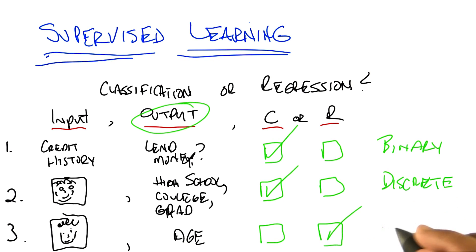Right, I think that is exactly right — you have a continuous output. But I want to point out that while the right answer is regression, a lot of people might have decided the answer was classification. What's an argument for why that would be? Well, if you think about ages as being discrete — you just say you can be one or two or three, up to 130 or so. Usually we don't talk about fractional ages, so you could think of it as a set of classes.